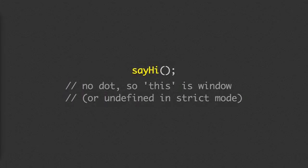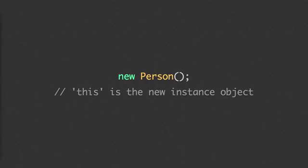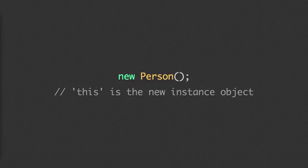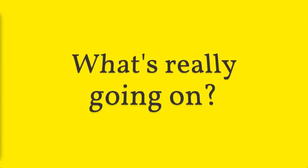If it's just a plain function call — even if it's a reference to what you think is a method — there's nothing to the left of the dot when we call it. So `this` defaults to the global object, being window, or undefined in strict mode. And we also have constructors where we invoke a function with `new`, and in that case we get a new instance, and `this` refers to that new instance. So that's enough to figure out what the value of `this` is, but what we haven't done is figured out what's actually going on — and more importantly, why.